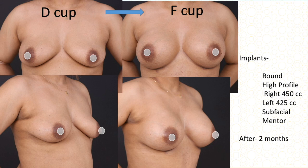This lady had D cup with grade 2 sagging. Because of her skin type, giving any scar on the breast would not have been a good option. I used implants only to lift — 450 cc and 425 cc to make it more symmetrical — placed sub-fascially with high-profile implants. This is the result after two months, and she went from D cup to F cup.